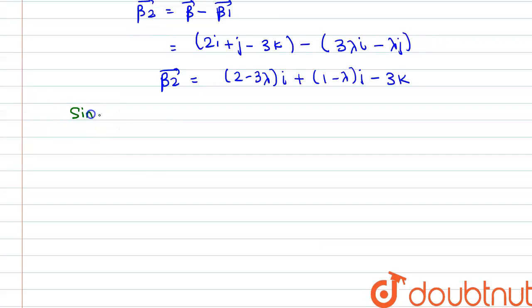Now since beta 2 vector is perpendicular to alpha vector, that means the dot product of alpha and beta 2 will be 0. So beta 2 dot alpha will be equal to 0.